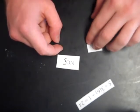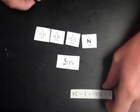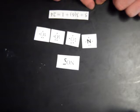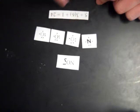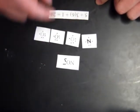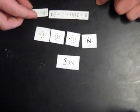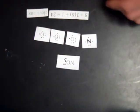Nitrogen has five valence electrons. Oxygen has six each. So our equation is: five from the nitrogen, plus three times six for the three oxygens, plus one because of the overall charge, giving us twenty-four electrons total. That's step number one completed.